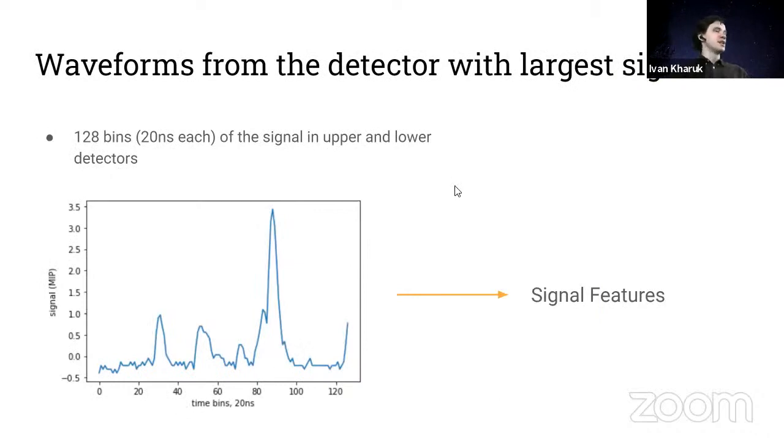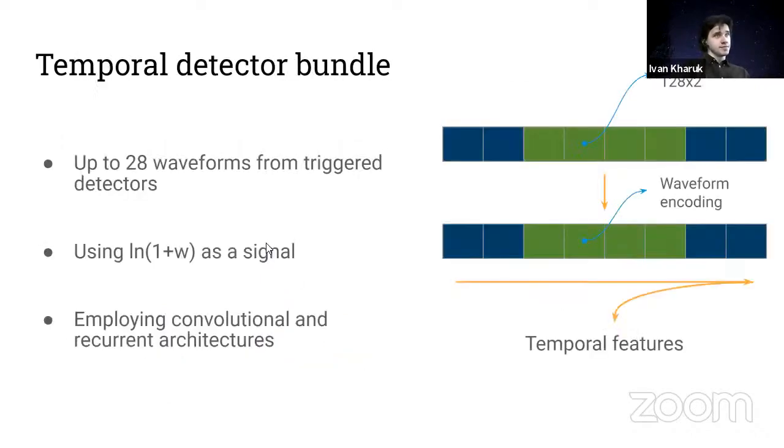The second sector of our neural network analyzes the waveform, that is the signal from the detector with the largest signal. A typical waveform that detectors stores looks like follows. To uniformize them, we cut all readings to contain 128 bins each, each bin corresponding to 20 nanoseconds. By analyzing this waveform by a series of convolution layers again, we obtain signal features of the event.